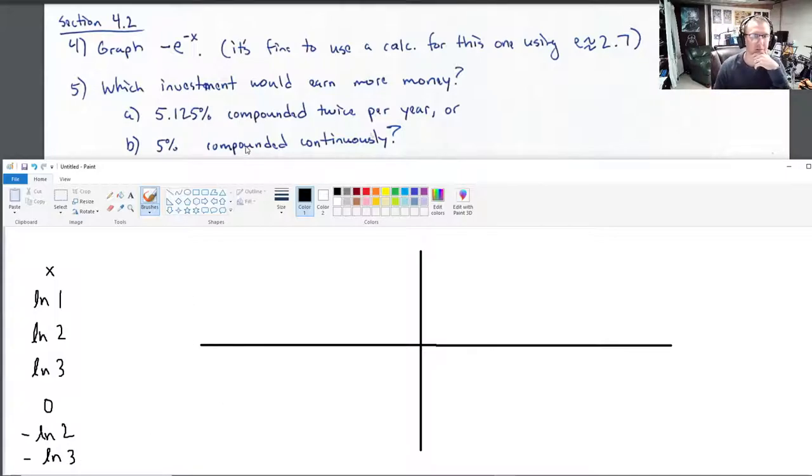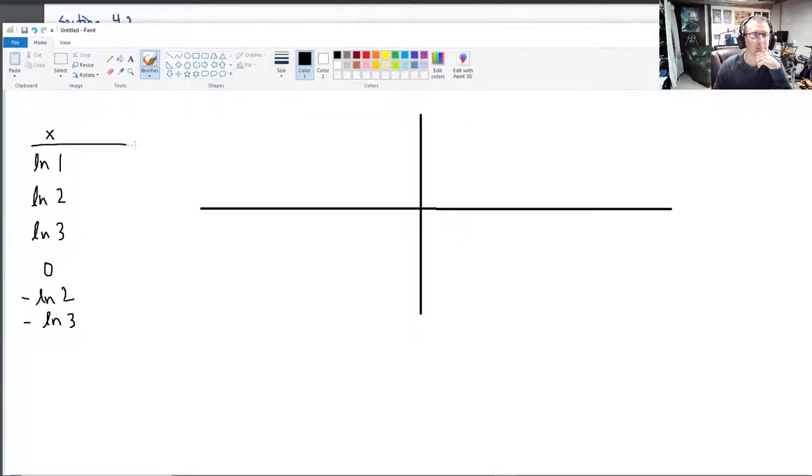Here we've got negative e to the negative x. So what is the natural log of 1? It's 0. That's why it was funny what I wrote down earlier. What power of e gives you 1? It's 0. So we're plugging in 0. This is negative e to the negative 0th power, which is negative 1.